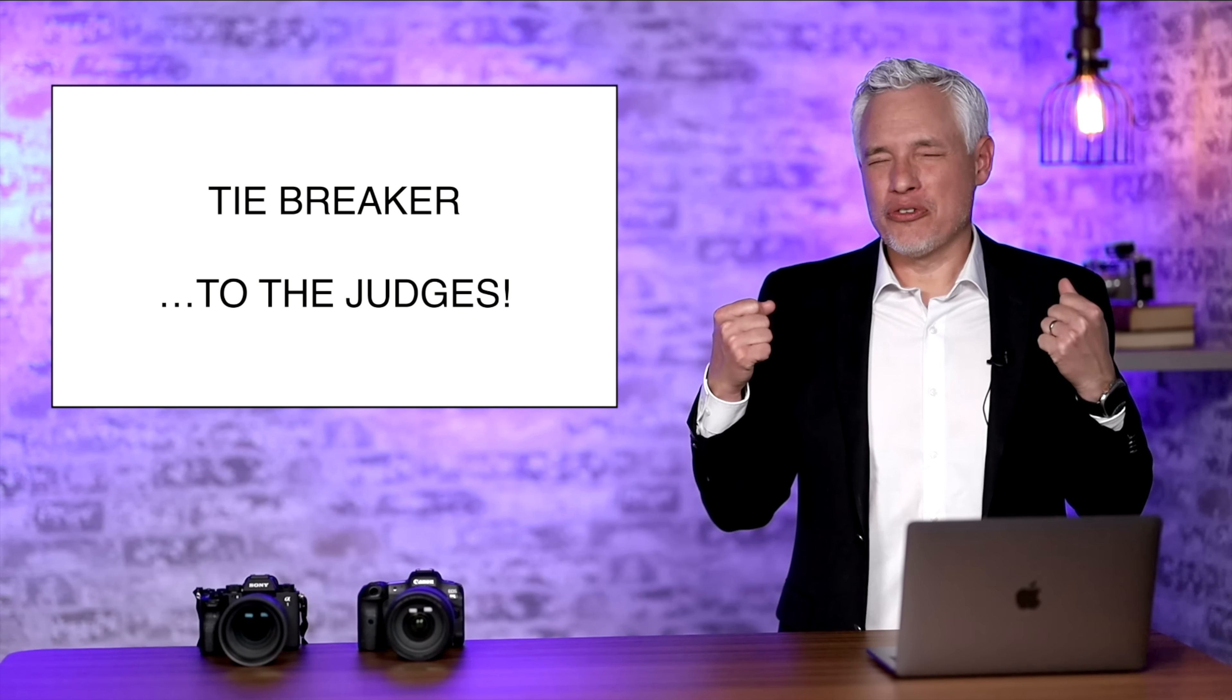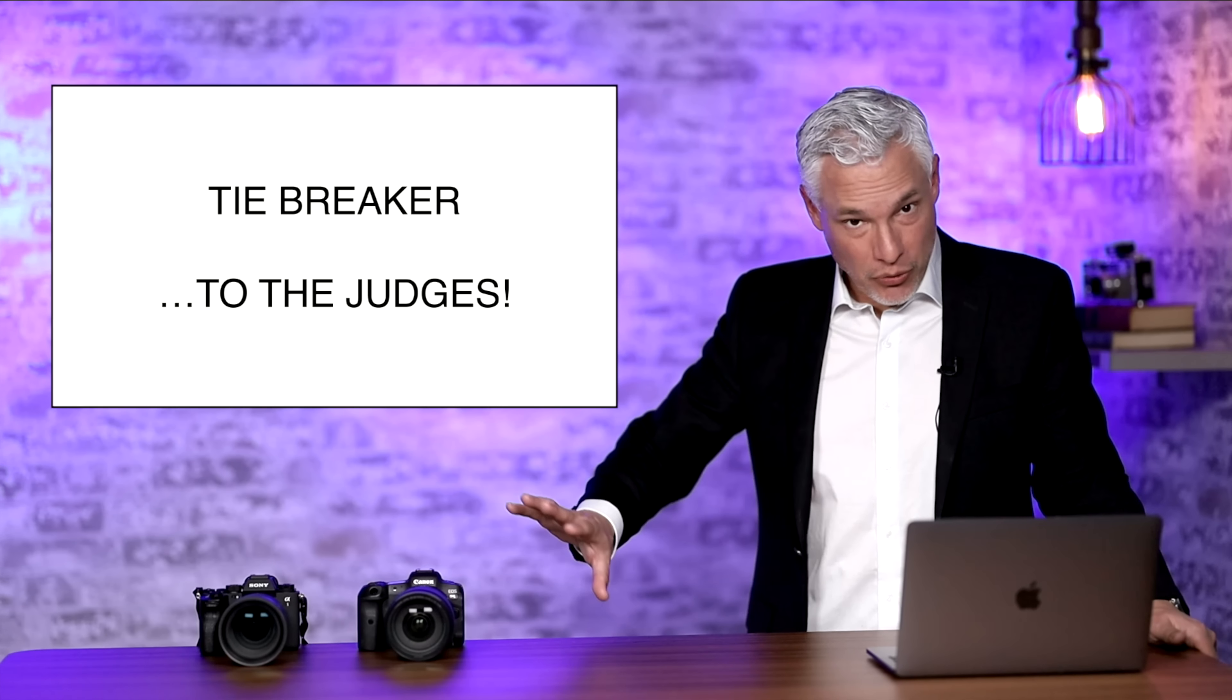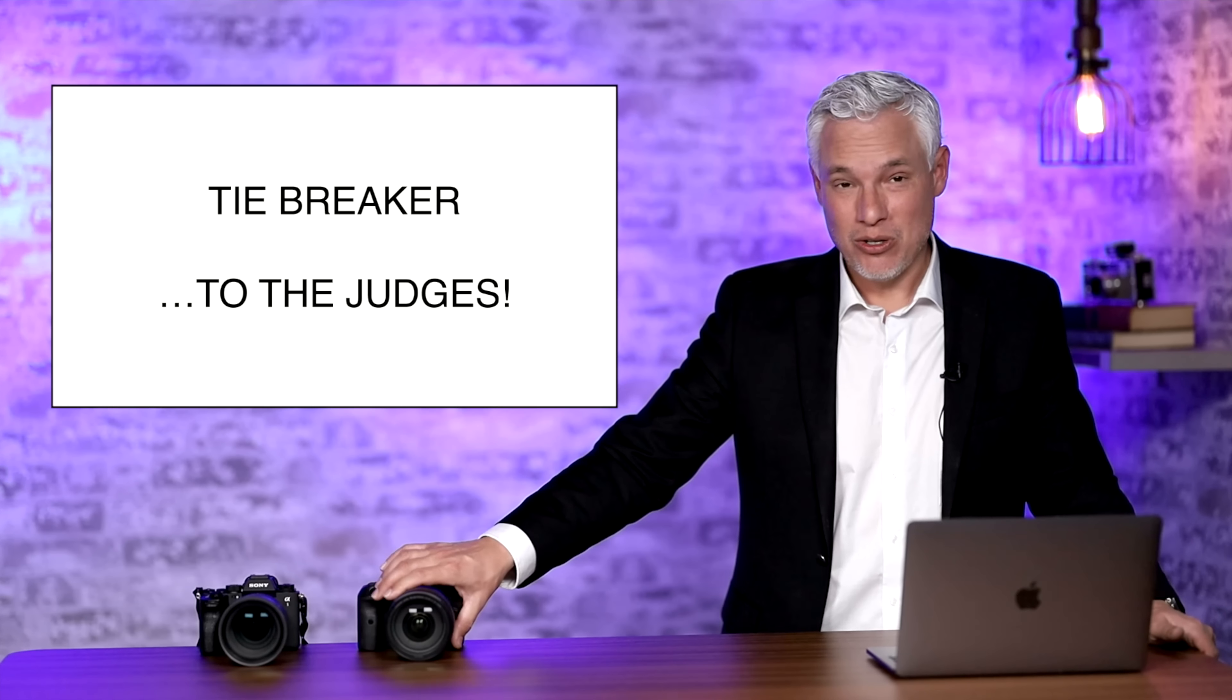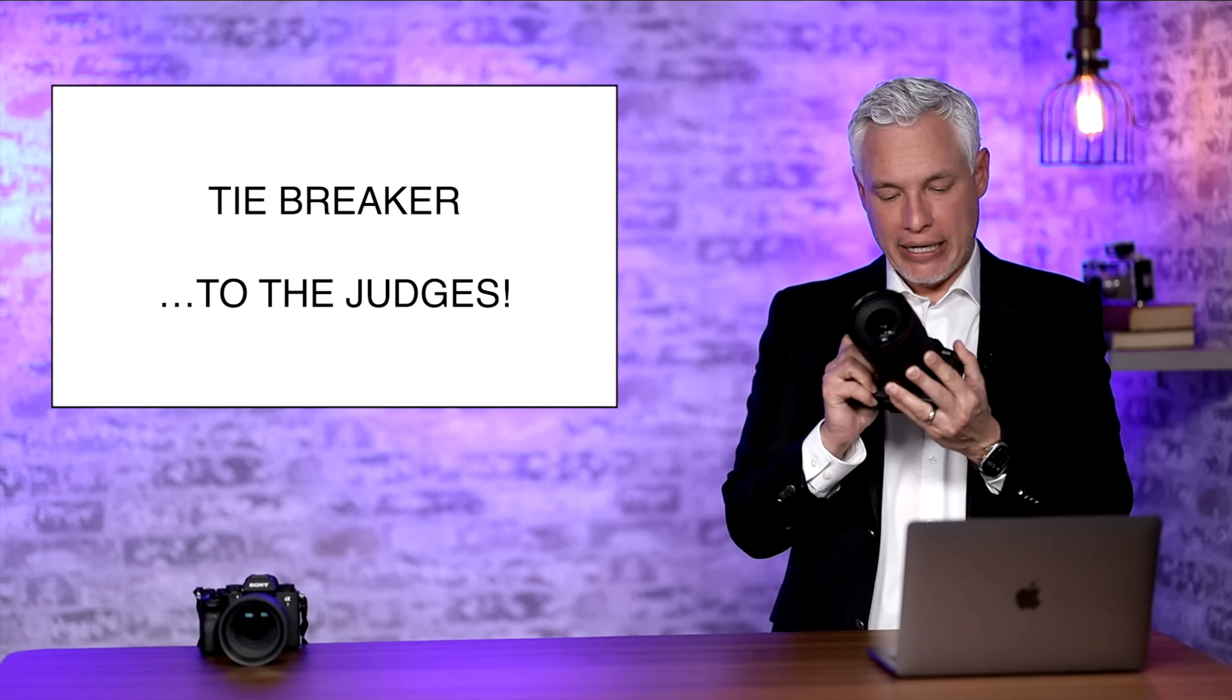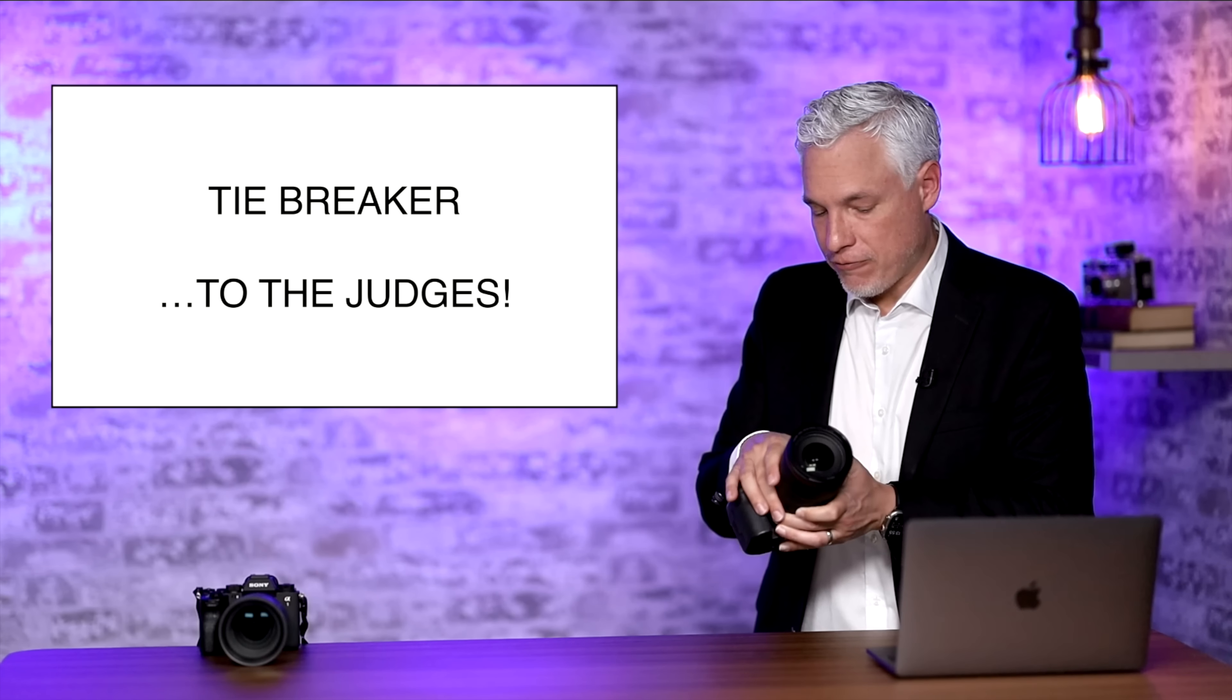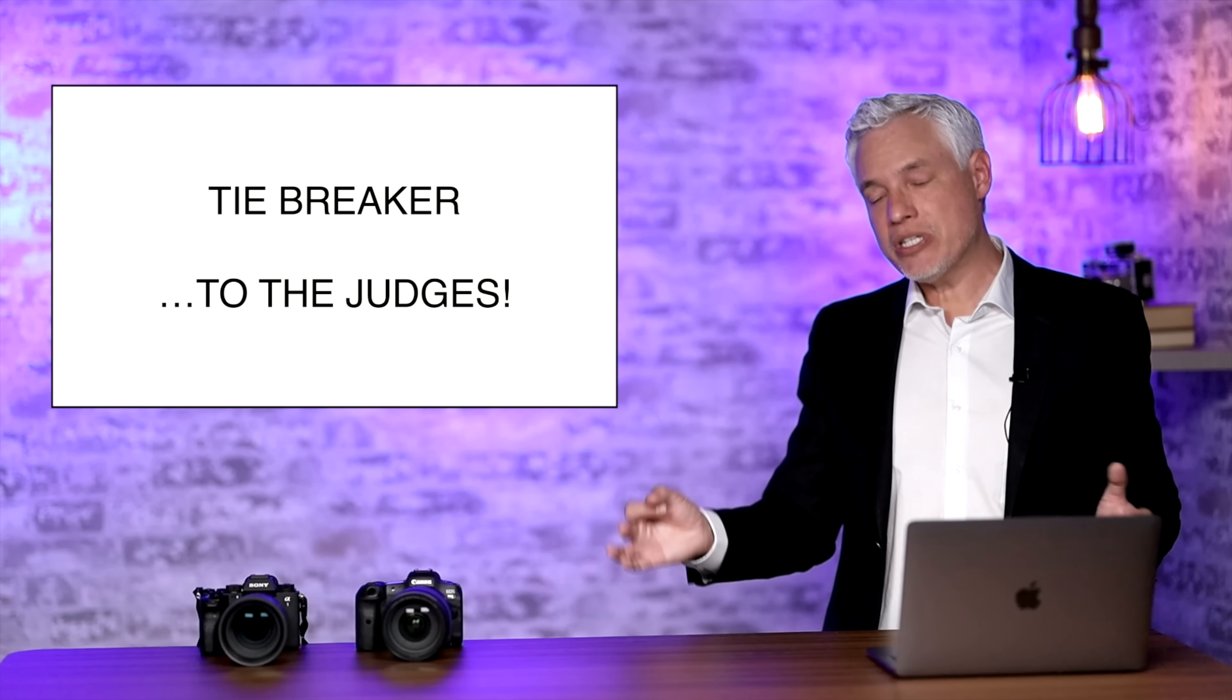So now it's over to the judges. I have to decide which has more useful high resolution mode. Both of these have been my main camera at different times. But right now I gotta say the Canon R5 wins. The Canon R5 is the best full-frame camera for making high-resolution images. Those 400 megapixel images are incredible. And the fact that I can finally take them into the real world, I can do things I could never do before. At least with still subjects.